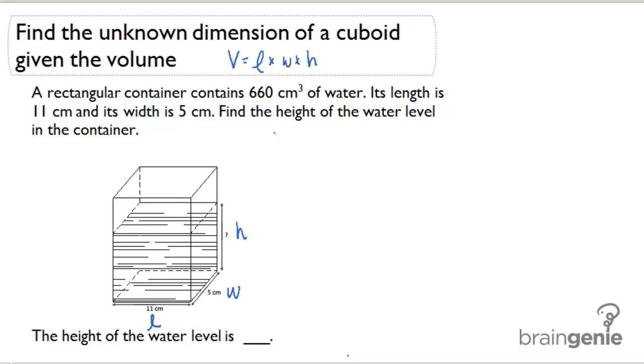So if I set up the formula, volume is 660 cubic units. I can tell that's volume because the question says the container contains this much water, which is how much space it occupies, which is 660 cubic inches. So 660 equals length, which is 11, times the width, which is 5, times the height.